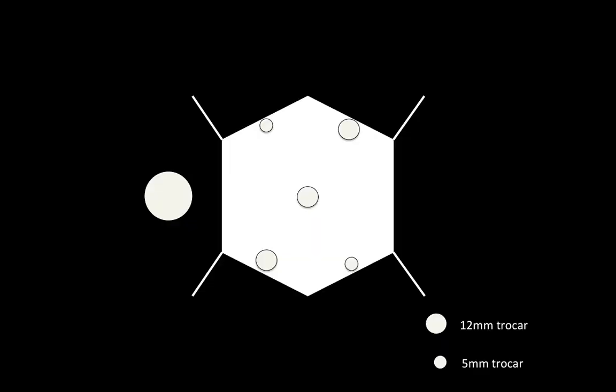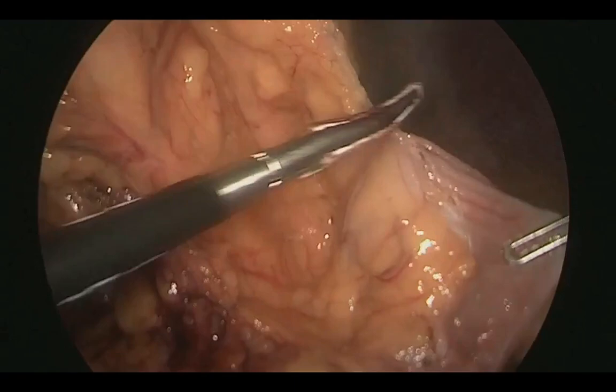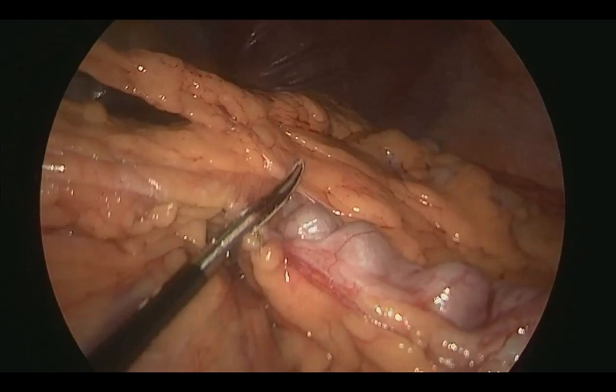The surgeon then switches to the right-hand side of the patient and utilises the ports placed in the right hypochondrium and iliac fossa to approach the splenic flexure and mobilise the left colon and rectum. The surgeon then proceeds with supracolic dissection approaching the splenic flexure. Careful movements allow for safe and effective mobilisation of the colon, avoiding iatrogenic splenic injury.